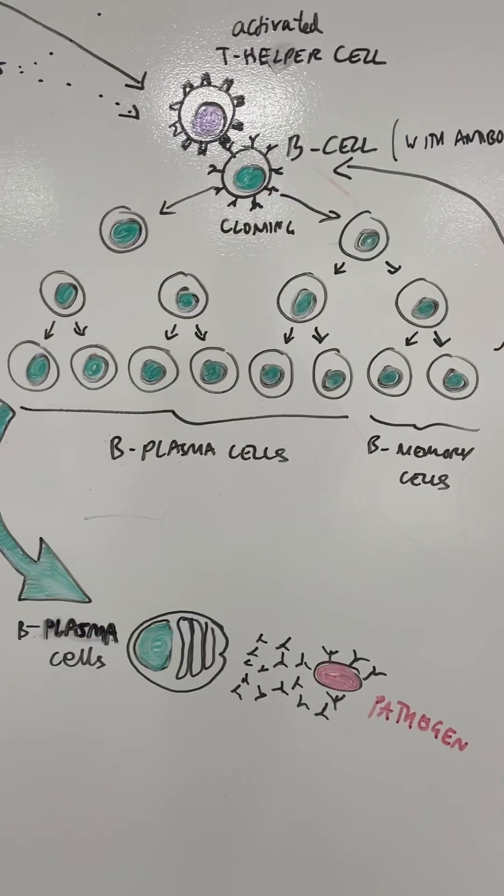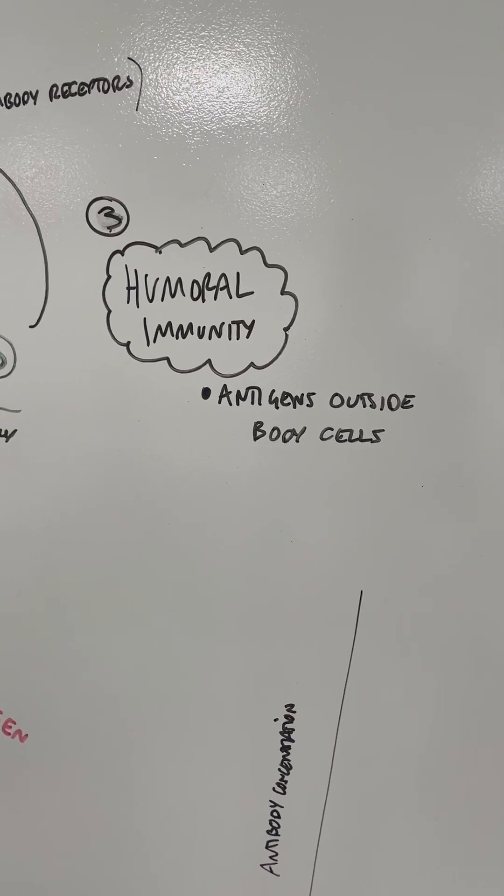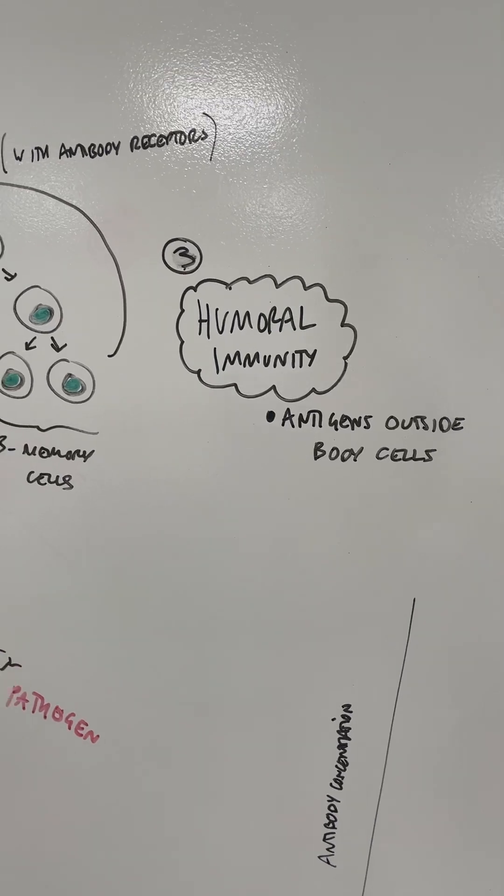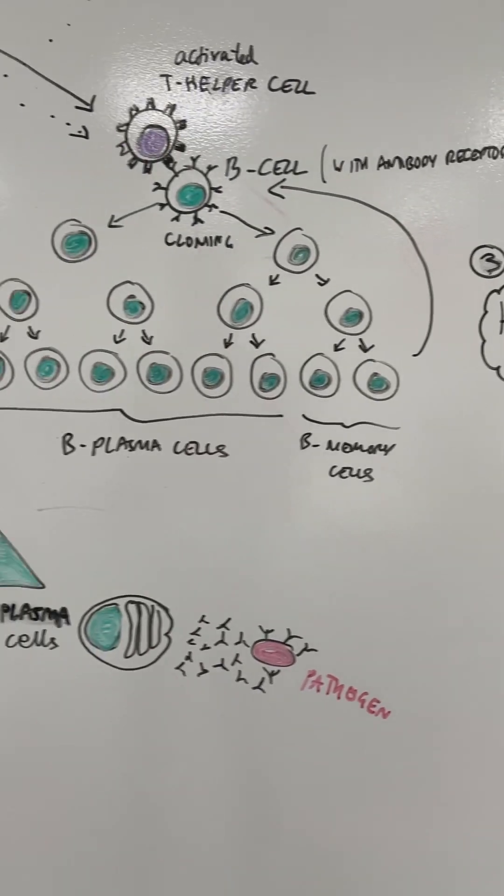If we move over to this side, we're going to look at something called the humoral immunity. Now this is when the antigens are outside of body cells. Body cells are not infected at this point. The pathogen is just floating around, let's say, in the blood.